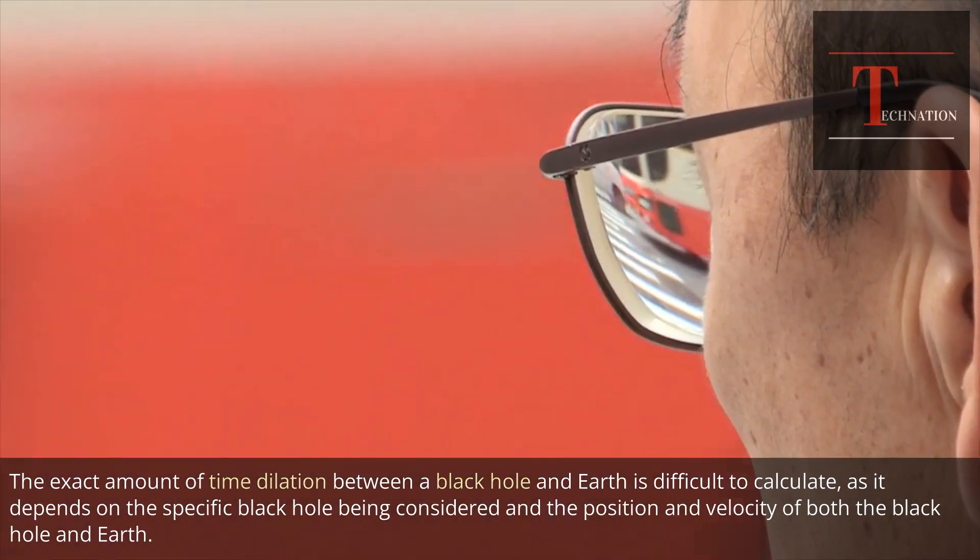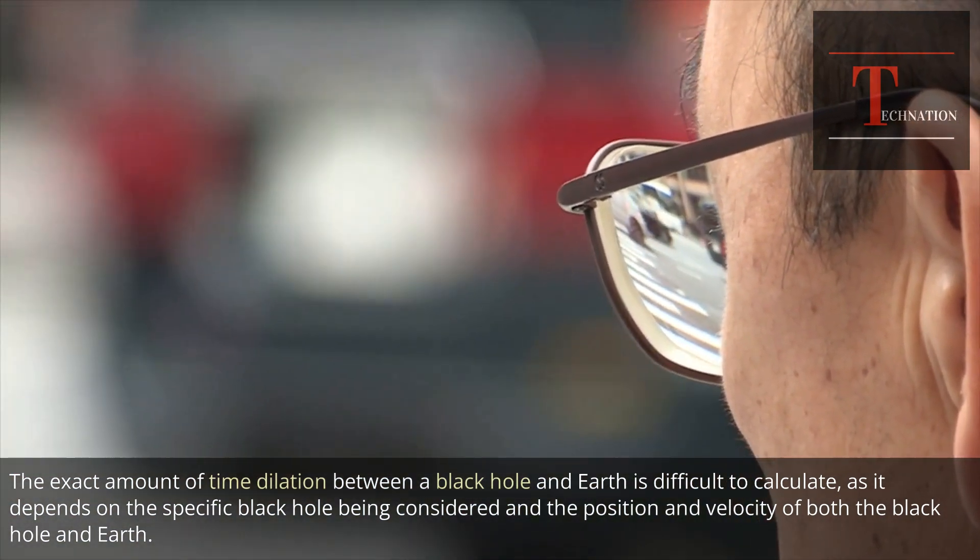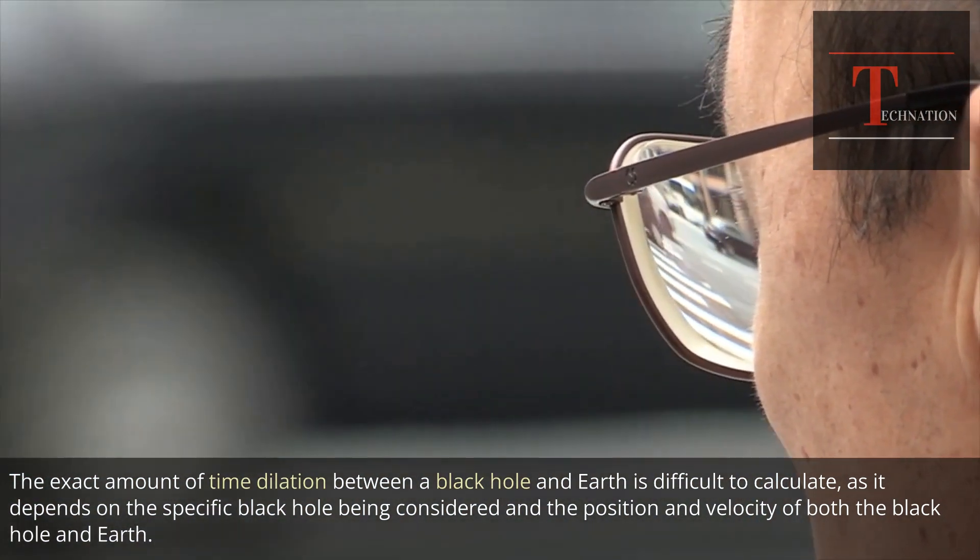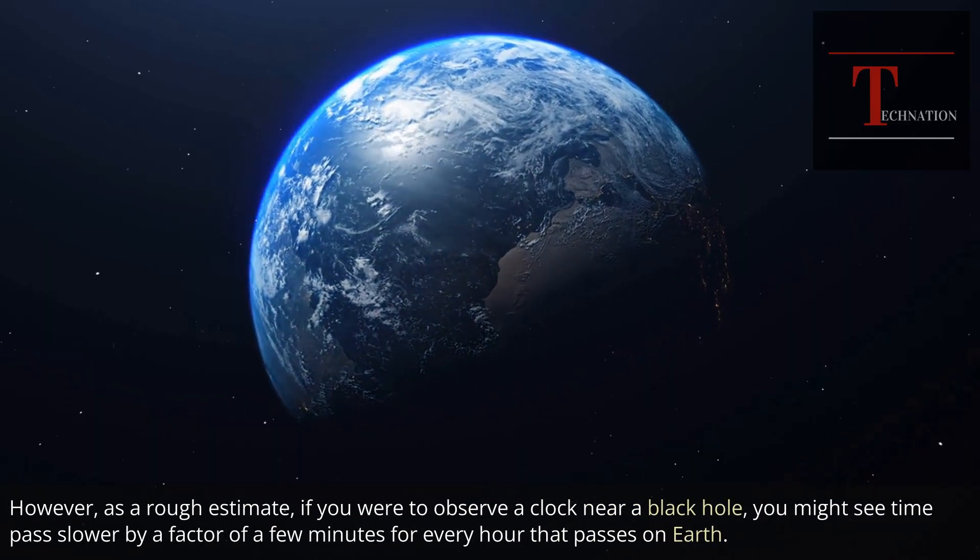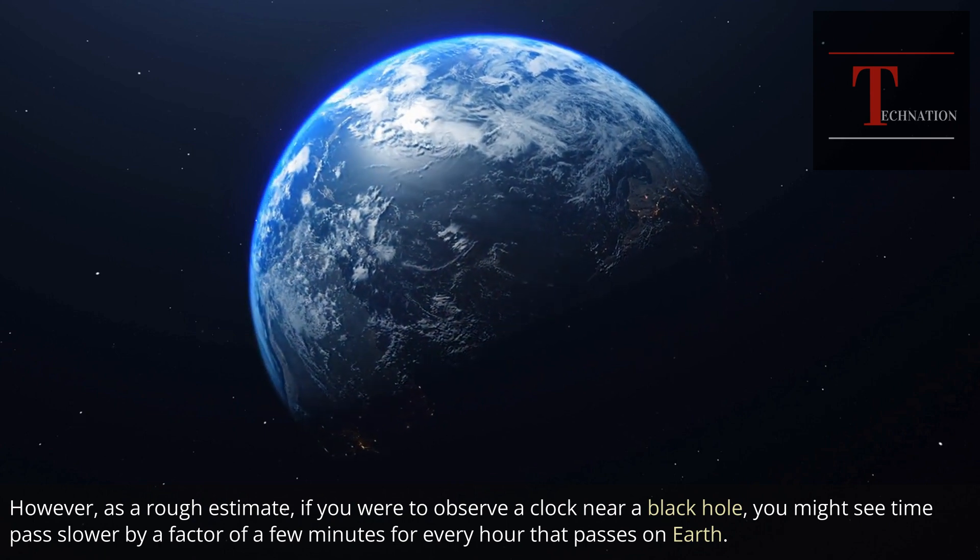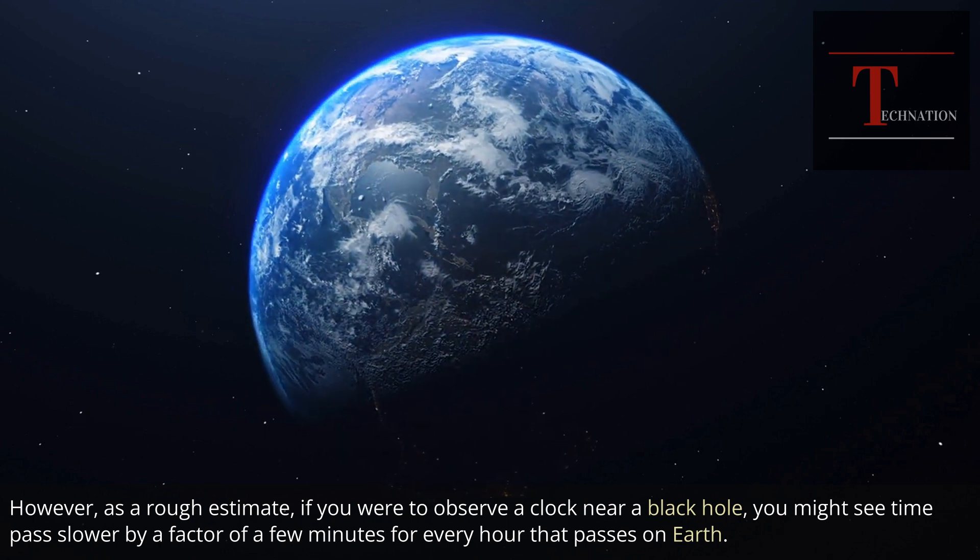The exact amount of time dilation between a black hole and Earth is difficult to calculate, as it depends on the specific black hole being considered and the position and velocity of both the black hole and Earth. However, as a rough estimate, if you were to observe a clock near a black hole, you might see time pass slower by a factor of a few minutes for every hour that passes on Earth.